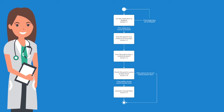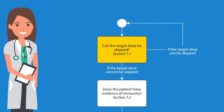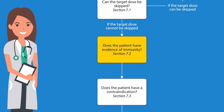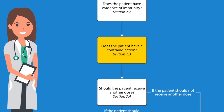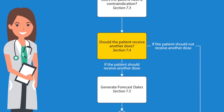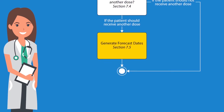Forecasting for a specific target dose is not required if the target dose can be skipped due to a patient's age or immunization history, the patient has evidence of immunity, the patient series is contraindicated, or the patient has received all necessary doses and the series is considered complete. If the patient needs to receive another dose, forecasting is required.